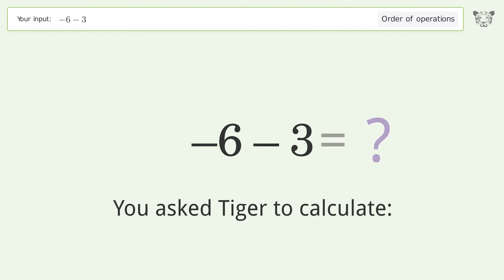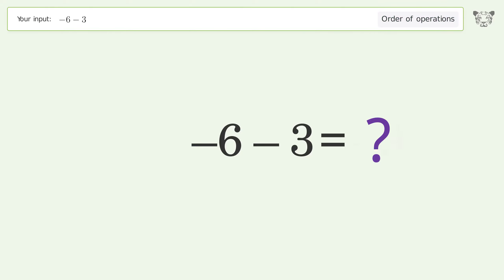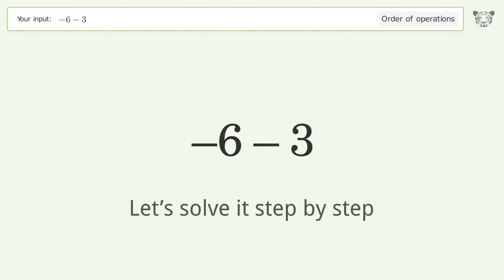You ask Tiger to calculate this. It deals with the order of operations. The final result is negative nine. Let's solve it step by step.